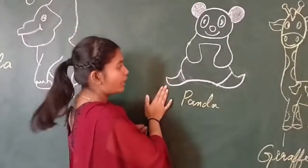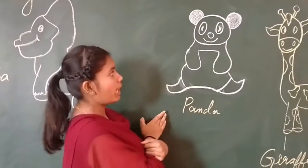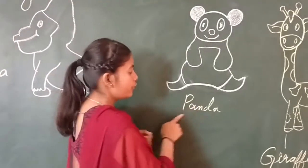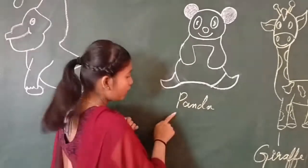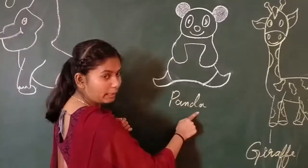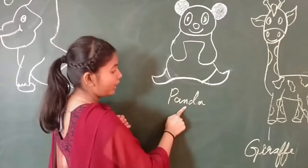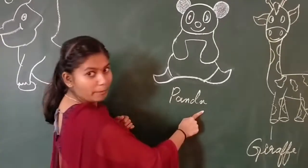Next is a panda. Panda has white and black color. Shall we spell panda? P-A-N-D-A, panda.